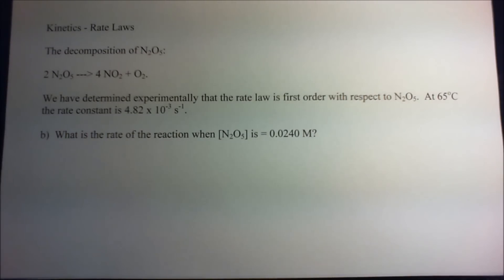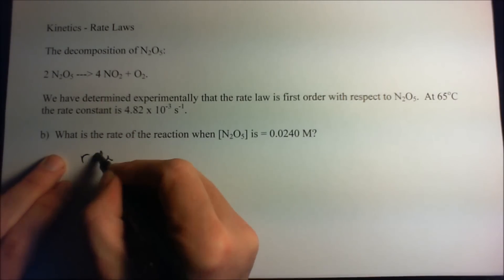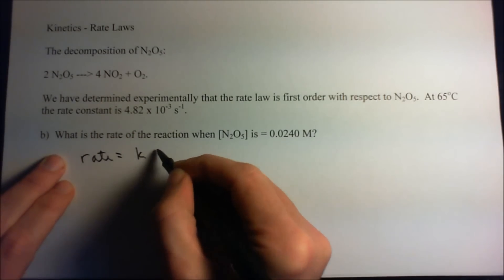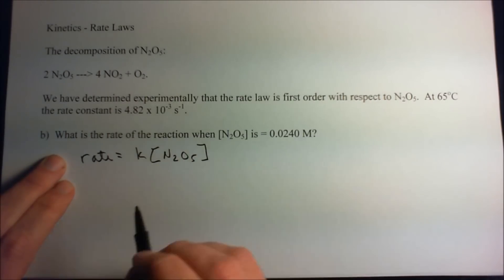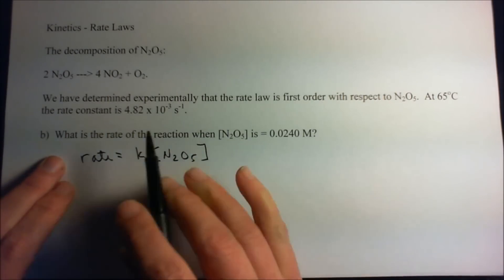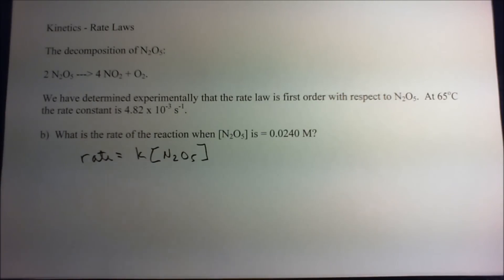So now that we have the rate law from the previous problem, we'll just go ahead and put it down there as the rate is the rate constant times the concentration of N2O5 to the first. Now the first is implied. I'm going to leave it off this time. So the rate is some constant times N2O5, the concentration.